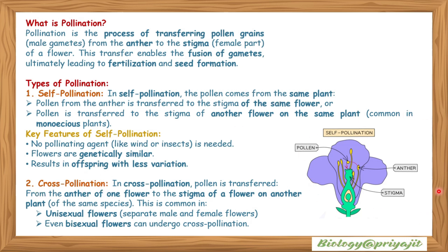In self-pollination, the pollen comes from the same plant. Pollen from the anther is transferred to the stigma of the same flower, or to the stigma of another flower on the same plant. This is common in monoecious plants. Key features: no pollinating agent like wind or insects is needed; flowers are genetically similar; and it results in offspring with less variation.